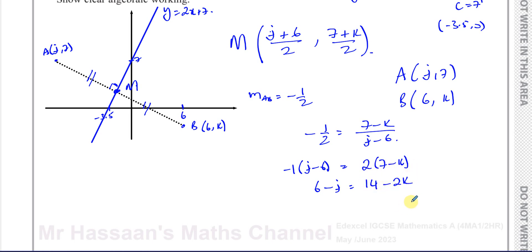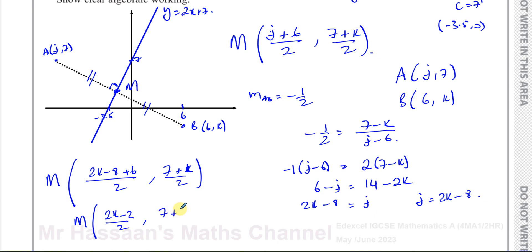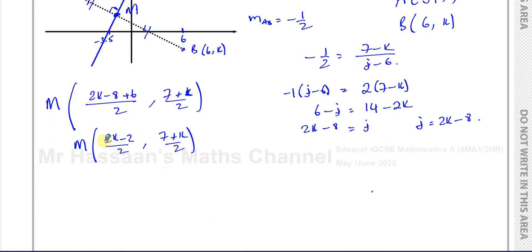So I can rearrange this to make J the subject. I get J equals 2K minus 8. Now I can substitute into the midpoint formula: the x-coordinate becomes 2K minus 8 plus 6 over 2, and the y-coordinate is 7 plus K over 2. This simplifies: the x-coordinate is 2K minus 2 over 2, which cancels to K minus 1, and the y-coordinate is 7 plus K over 2. So those are the coordinates of M in terms of K.